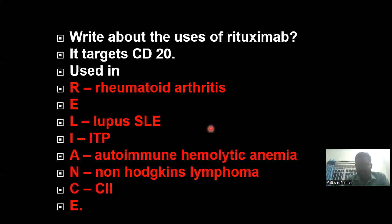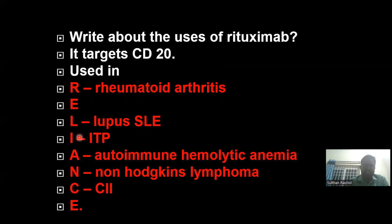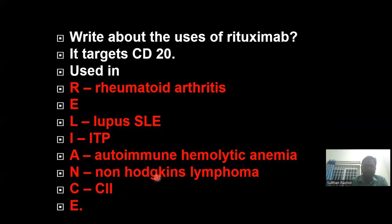Now coming back to rituximab — it acts against CD20 and is particularly used in non-Hodgkin's lymphoma. To remember other uses, use the mnemonic 'RELIANCE' — R for Rheumatoid Arthritis, L for Lupus (SLE), I for ITP (immune thrombocytopenia purpura), A for Autoimmune hemolytic anemia, N for Non-Hodgkin's lymphoma, C for CLL, and E for the endings. These are the uses of rituximab targeting CD20.